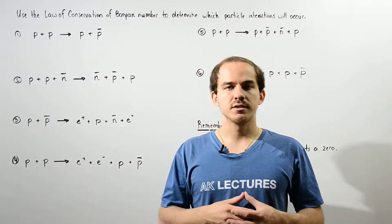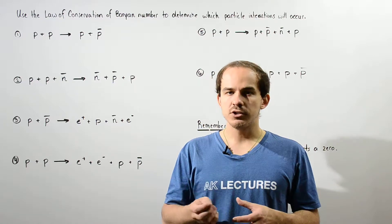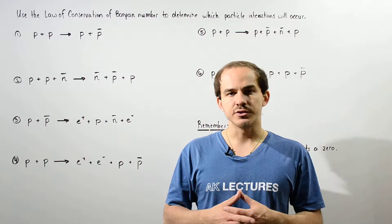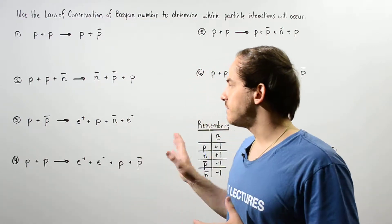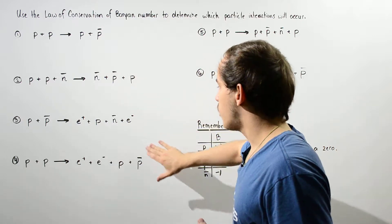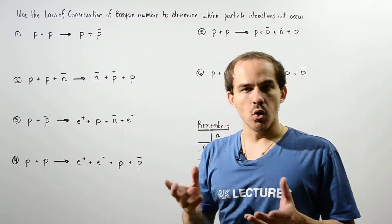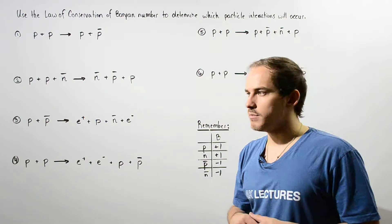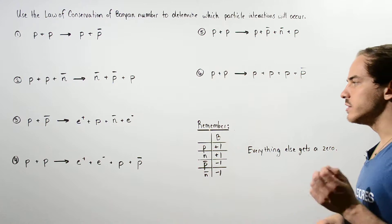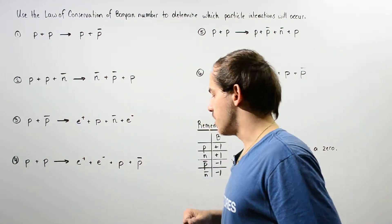Now that we've discussed the law of conservation of baryon number for particle interactions, let's take a look at the following example that gives us six different particle interactions. Our goal is to use the law of conservation of baryon number to determine which particle interactions will take place in nature. Let's begin with interaction number one.